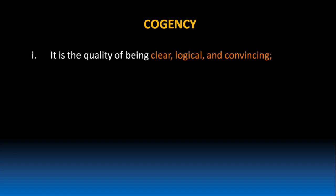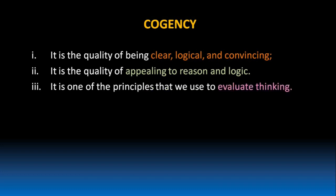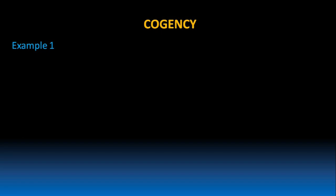Hello everyone. In this lesson, we'll be discussing cogency. What is cogency? It is the quality of being clear, logical and convincing. It is the quality of appealing to reason and logic. It is one of the principles that we use to evaluate thinking. Let's take a few examples to understand what cogency is.